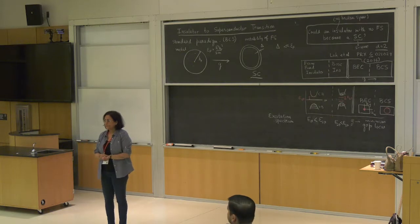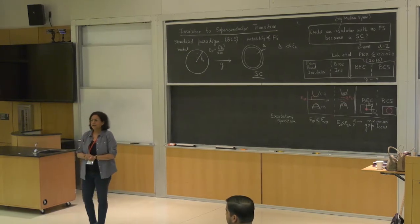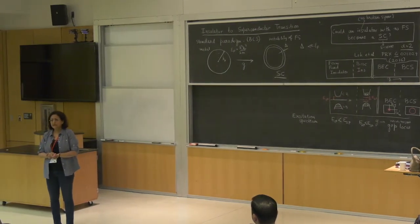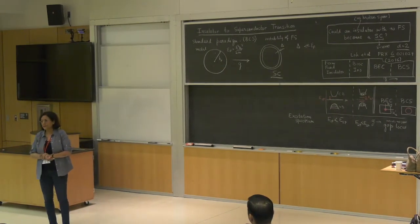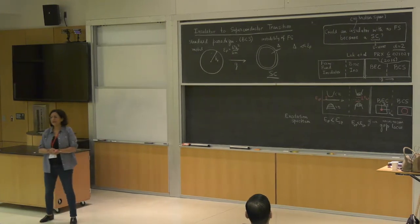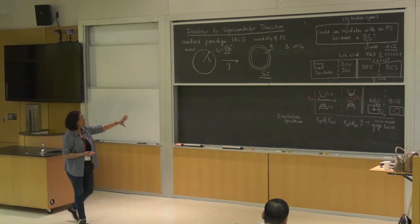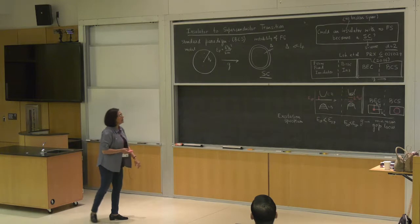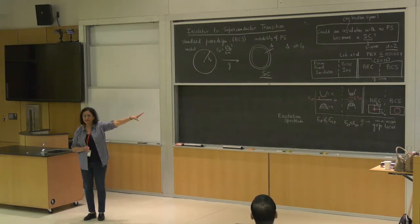Am I supposed to think of G as some interaction — on the far left it's zero interaction, the far right it's super strong interaction? Yes, what G is will become clear when I write down the model. It will be a combination of attraction and another parameter. Let me come to the model now.